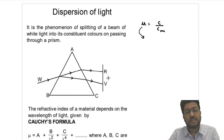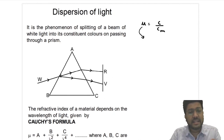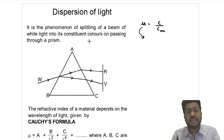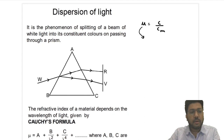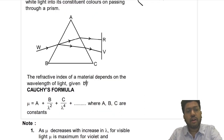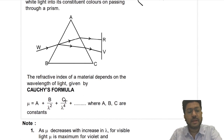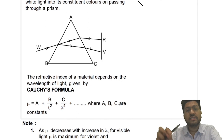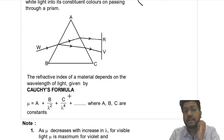Violet has minimum speed and maximum refractive index. So dispersion is nothing but the splitting of white light. It is the phenomenon of splitting of a beam of white light into its constituent colors when it passes through a prism or any transparent material. Now the refractive index of a material depends on the wavelength of light according to Cauchy's formula given by μ = a + b/λ² + c/λ⁴, where a, b, c are constants which are medium dependent. So as wavelength changes, the refractive index of the same medium changes.